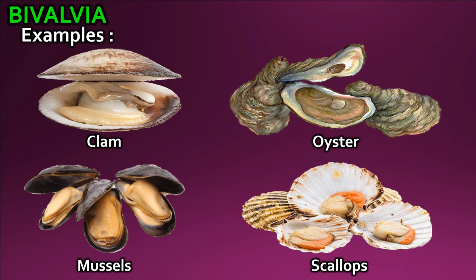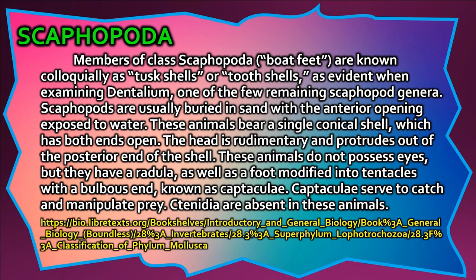Members of class Scaphopoda (boat feet) are known as tusk shells or tooth shells. Scaphopods are usually buried in sand with the anterior opening exposed to water; they bear a single conical shell open at both ends. The head is rudimentary and protrudes out of the posterior end of the shell. These animals do not possess eyes but have a radula and a foot modified into tentacles with a bulbous end known as captacula, which serve to catch and manipulate prey.